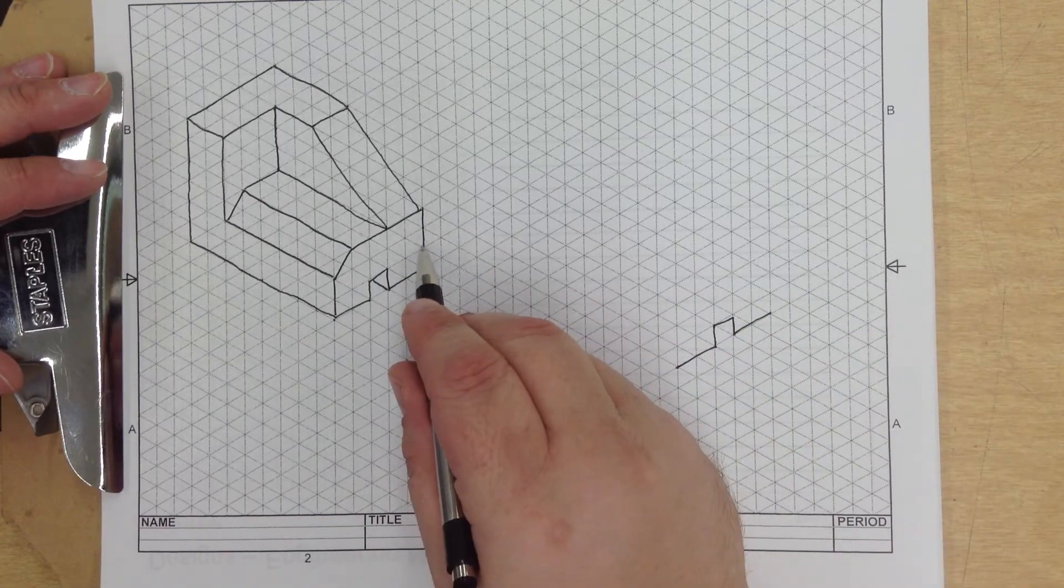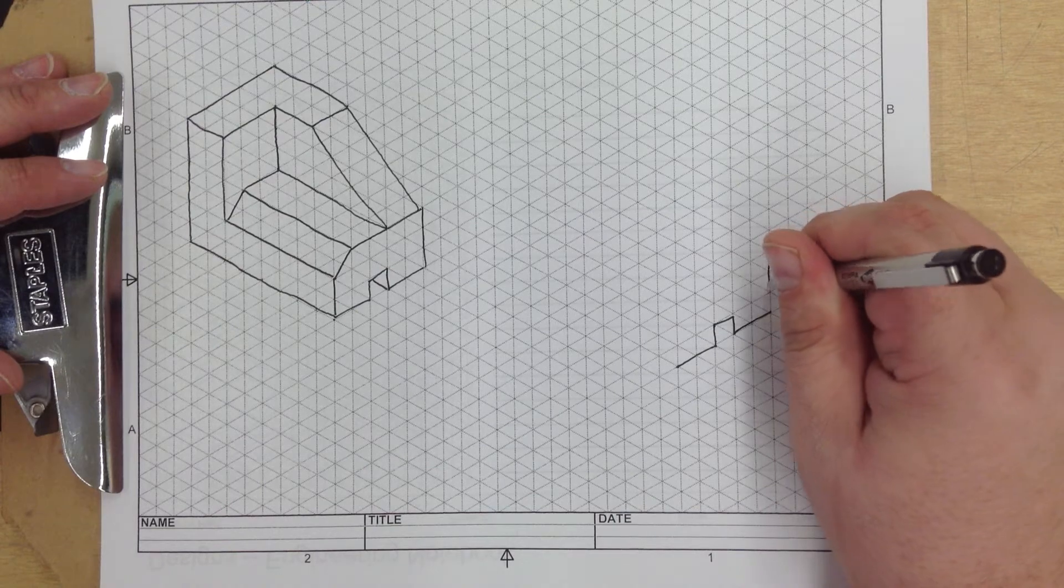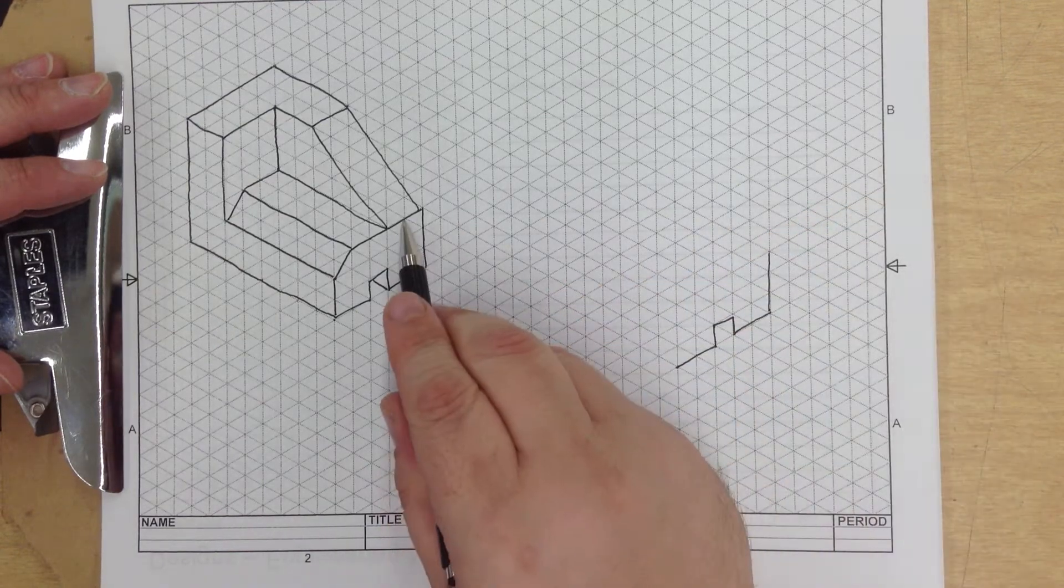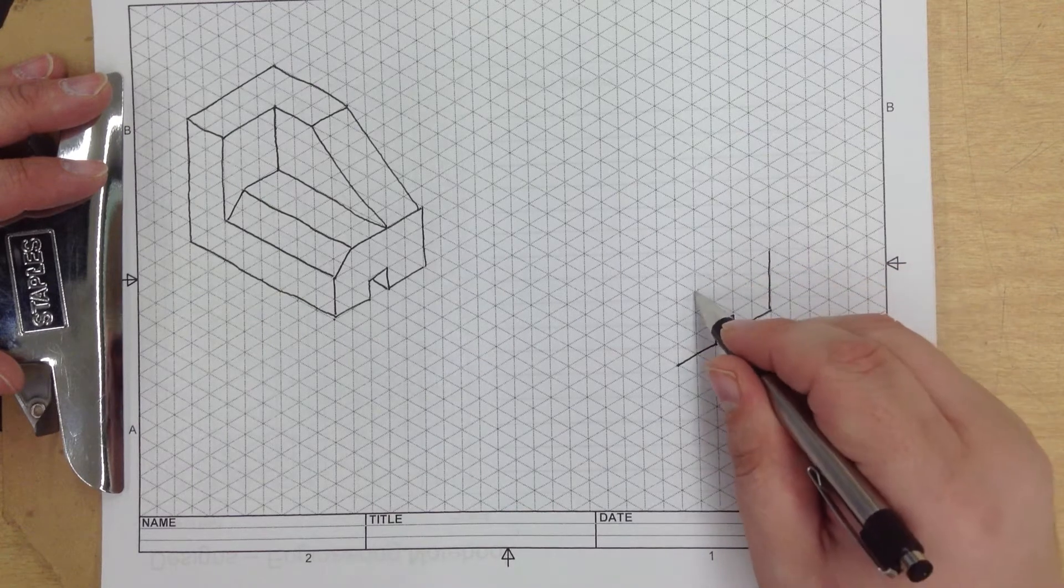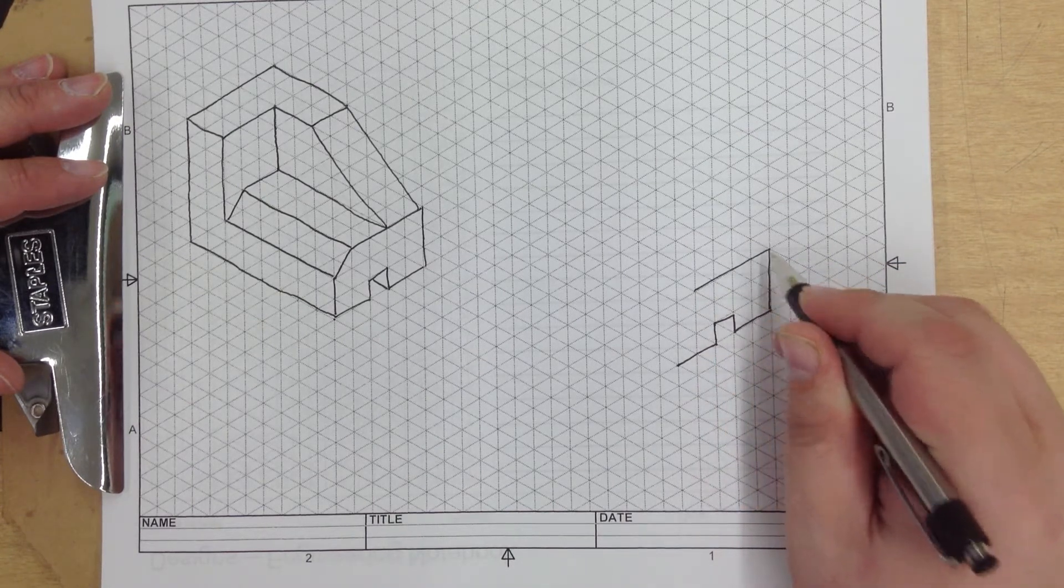Now if we check this out, one, two, three... one, two, three, just like so. And one, two, three, four... one, two, three, four, just like so.